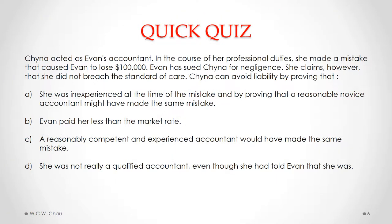Let's now have a look at this quick quiz question. Please pause this video so that you can consider this question. So, we need to determine what is the appropriate standard of care that applied to China. The answer is C — a reasonably competent and experienced accountant would have made the same mistake. So the standard of care that applied to China was that of a reasonably competent and experienced accountant. If a court finds that a reasonably competent and experienced accountant would have made the same mistake, then there would be no liability.